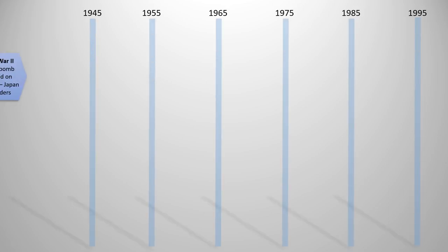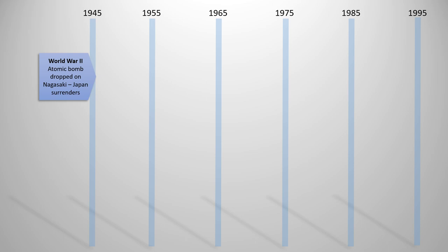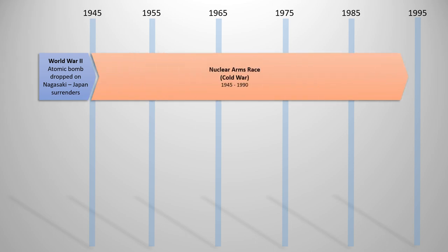To enter World War II — if you recall your history — in 1945 the war with Japan ended when the atomic bomb was dropped on Nagasaki and Japan surrendered. A number of historically significant things happened here leading up to the internet. First of all, the nuclear arms race began after that second atomic bomb was dropped that led to the end of the war. The USSR actually detonated their first atomic bomb in 1949, just four years after the Nagasaki bomb.